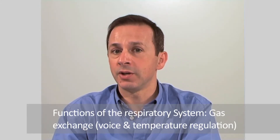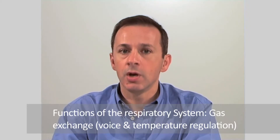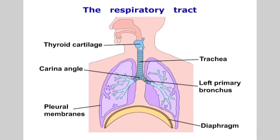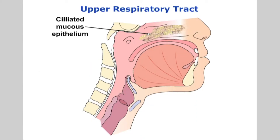When assessing a patient for respiratory conditions, we need to bear in mind that it is more than just a pair of lungs. The respiratory tree starts from the nose and mouth and ends at the alveoli. The nasal passages are lined with mucous epithelium and hairs, and their purpose is to warm up the air which is inhaled, to moisten and to filter it.